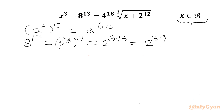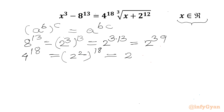Similarly, for 4^18, we can write 4 as 2², so (2²)^18 equals 2^(2×18) = 2^36.